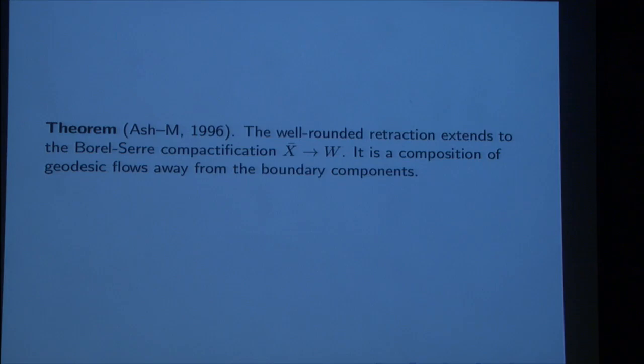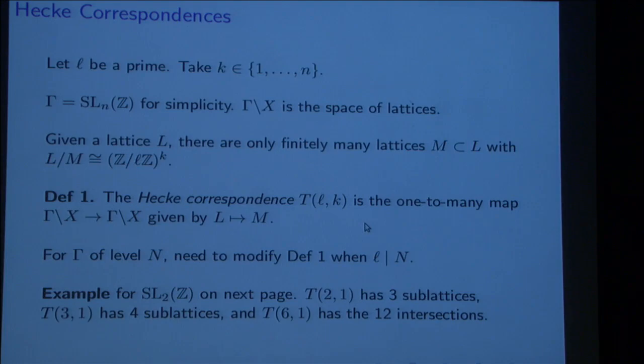Ash and I proved back in 96 that the well-rounded retraction extends to the Borel-Serre compactification X bar. In fact, it's a composition of geodesic flows away from the boundary components. When I say fix the line, take the perpendicular subspace and shrink in like a cylinder, that is in fact the geodesic flow. It's the action of a torus on the other side from the side that G is acting on. The dimension that you're retracting away is N minus one. In general, you do N minus one different geodesic flows.